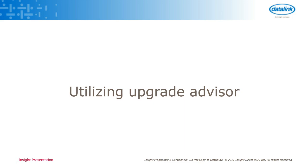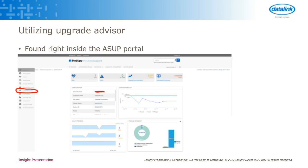Next up, utilizing Upgrade Advisor. This is a utility NetApp provides that will give you step-by-step upgrade instructions for getting to a new version of ONTAP. You can find it right inside of the support portal. On the left-hand pane when it pops out, you'll see one that says Upgrade Advisor.